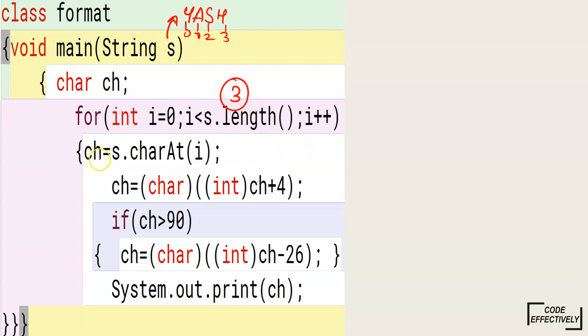Now let's see, ch is equal to s.charAt(i). Let's see what happens here. When the value of i will be 0, we will store ch = s.charAt(0). What is the value of charAt(0)? It's Y. So ch is equal to Y. And what will you do now?